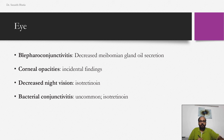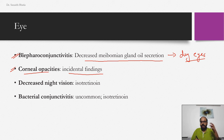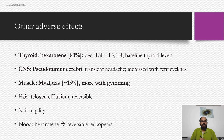Ocular side effects include blepharoconjunctivitis, mainly due to decreased meibomian gland oil secretion leading to dry eyes — tell patients their eyes might feel dry and provide artificial tears. Corneal opacity can occur but these are incidental findings that don't impact vision. Decreased night vision has been reported with isotretinoin — counterintuitive since night vision is impacted by vitamin A deficiency, but excess retinoids can also cause this. Bacterial conjunctivitis is common with isotretinoin.